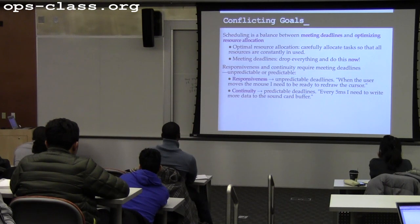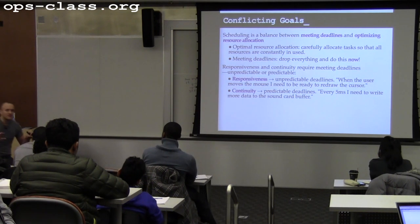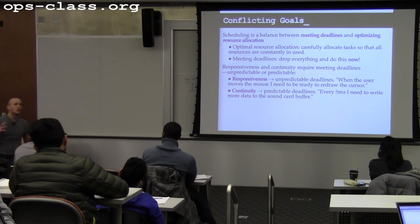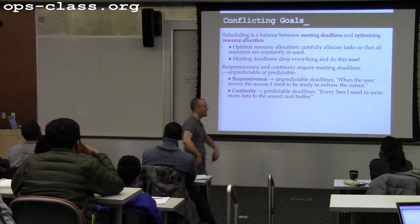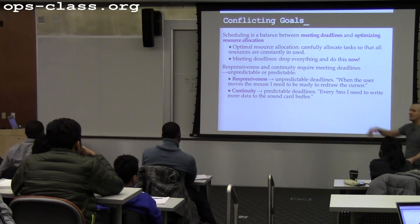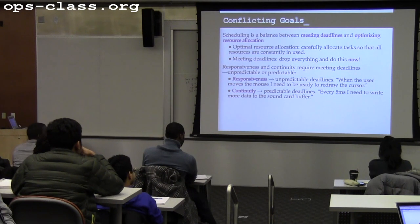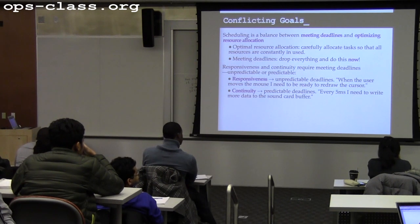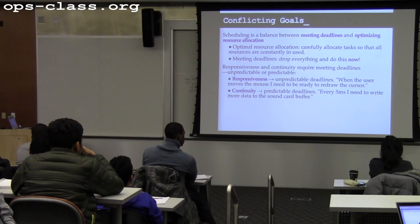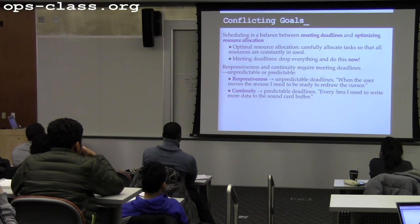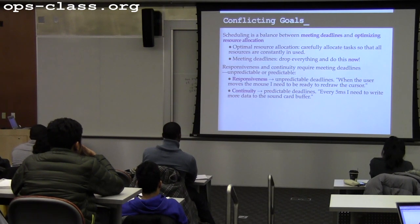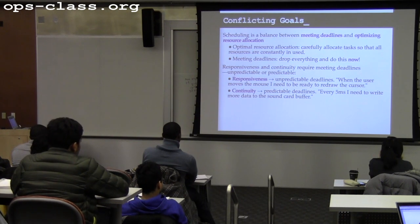Responsiveness and continuity require meeting deadlines. Responsiveness is the idea that the computer is sitting there constantly waiting for you — if you start a big defragmentation and then want to browse the web, the computer can't say 'come back in 20 minutes.' Continuity involves predictable deadlines — periodically the music player needs to write data to the audio buffer, or the flash player needs to repaint the screen. Responsiveness is unpredictable; you need to respond to whatever the user suddenly does.